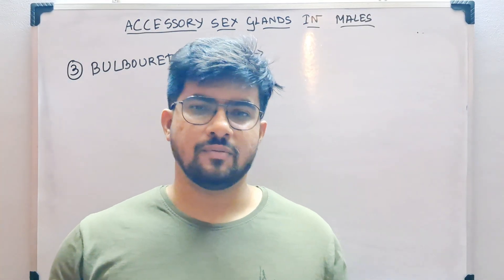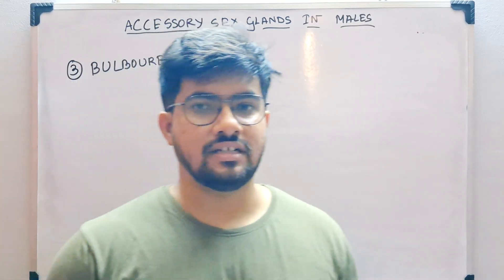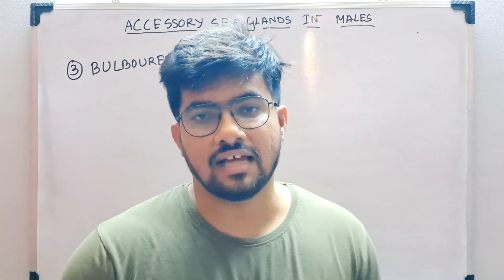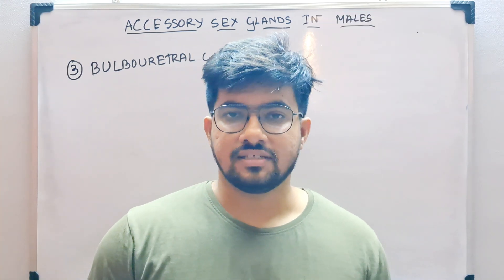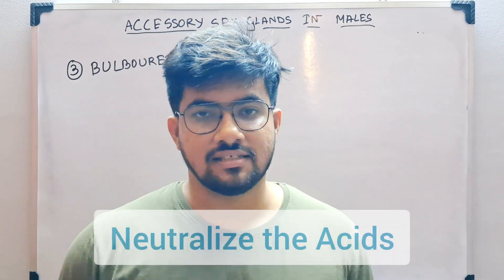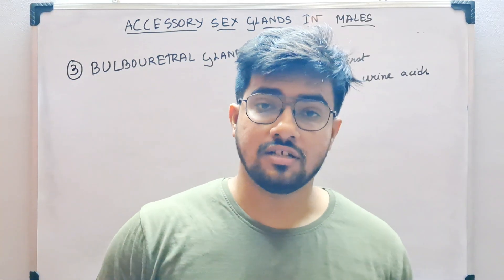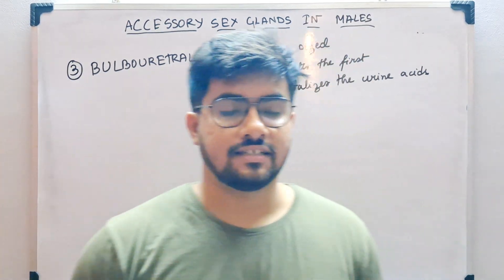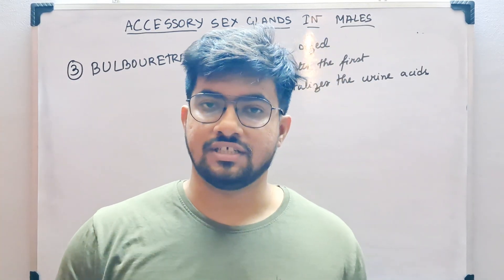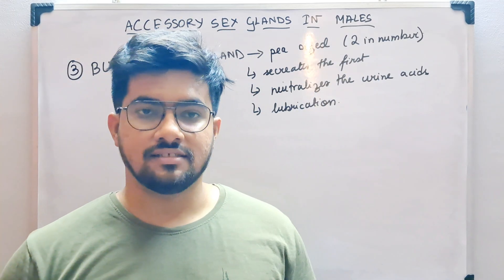The bulbourethral glands are also called Cowper's glands. They are about the size of a pea, so they are very small. They mainly secrete alkaline secretions and mucus. The secretions from the bulbourethral glands are the first to go out during stimulation, and they mainly help to neutralize the acids in the urethra of the males. They also help to lubricate the tip of the penis before the other secretions and semen are given out.